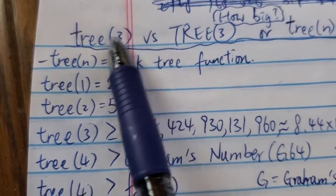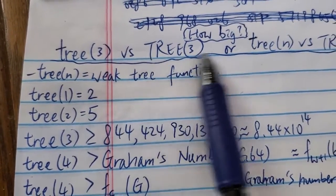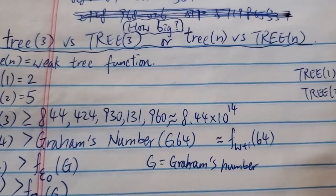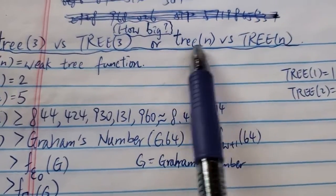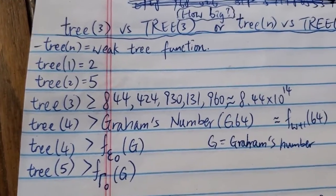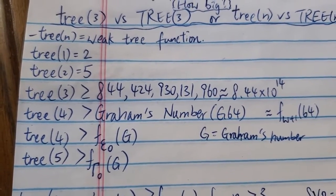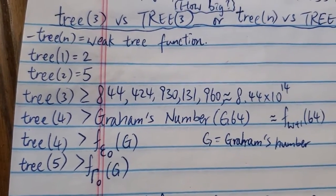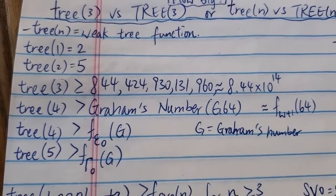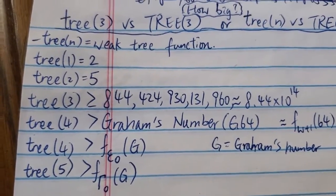Hi everyone, today we're going to look at 3-3 vs. 3-3 — the weak 3-3 versus the regular 3-3. How big are they? What's the difference between them? Are they close or very far apart? This is also related to the comparison between 3-N vs. 3-N. In this video I'm not going to explain what 3-3 is — I have other videos on that. I'm just going to tell you how big they are in terms of approximation and lower bounds. All this info is from the Googology wiki.